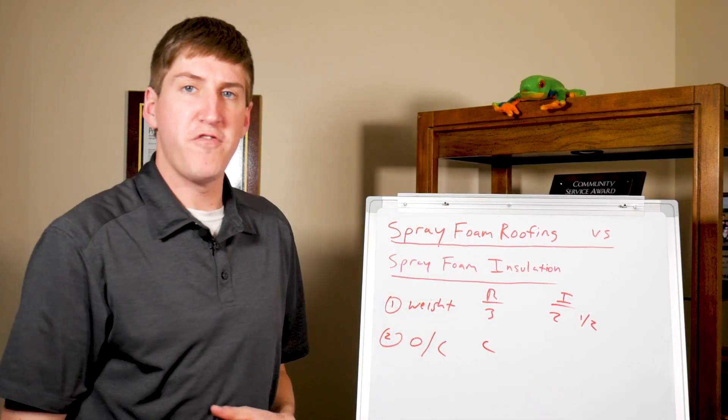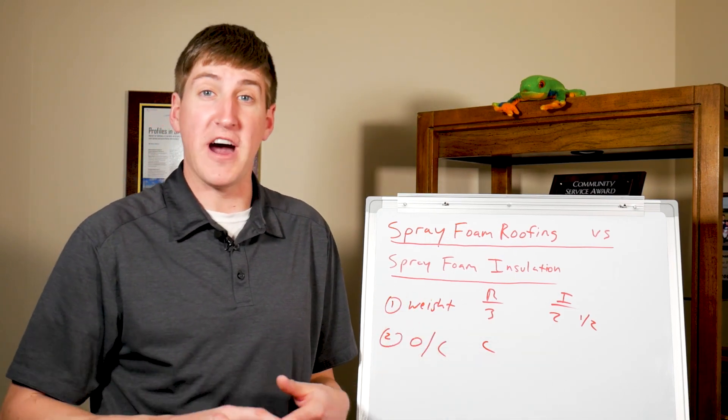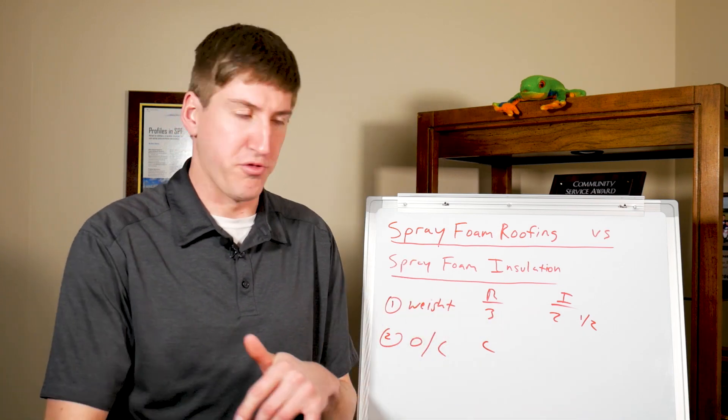We use closed cell spray foam because of its water-resistant properties—it keeps water out of your roof. Open cell kind of lets water come in and go through it.